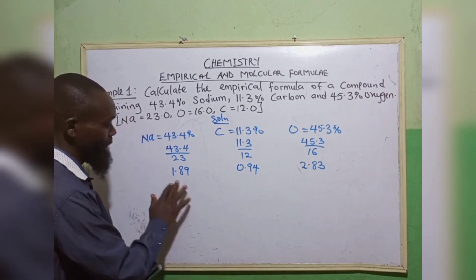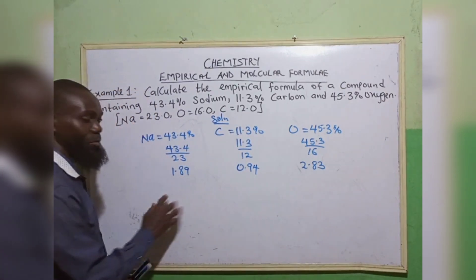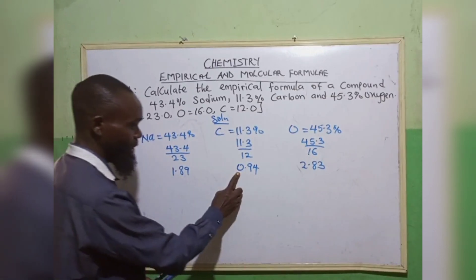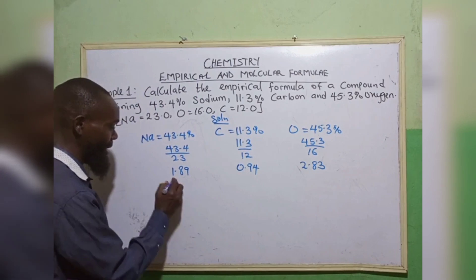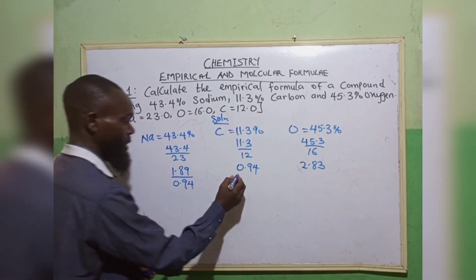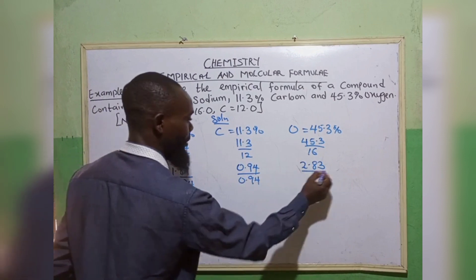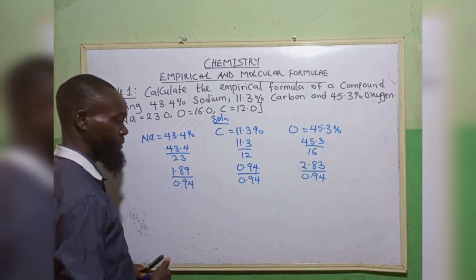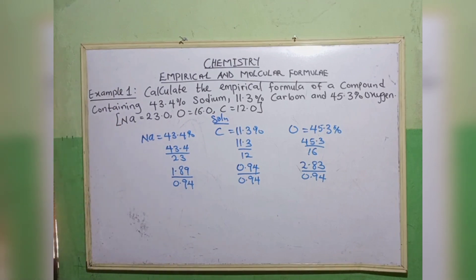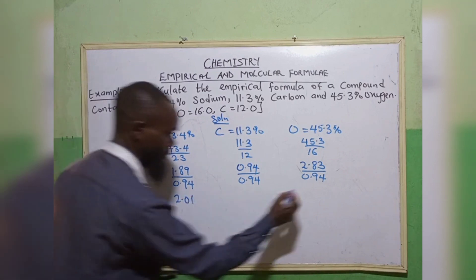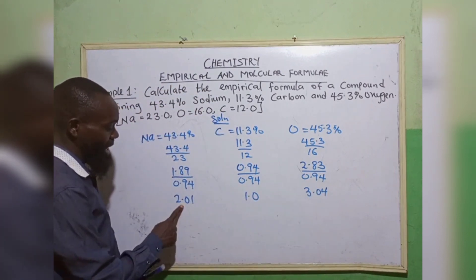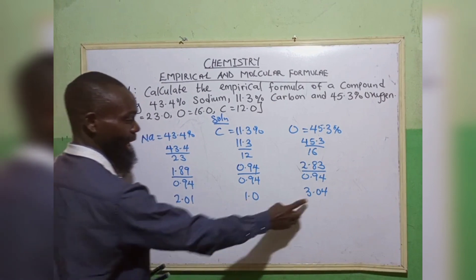The next step is to divide by the smallest number. We divide by 0.94 — 1.89 divided by 0.94, 0.94 divided by 0.94, and 2.83 divided by 0.94. So I will take our calculator and we divide. Here we have 2.01, 1.0, and 3.04.